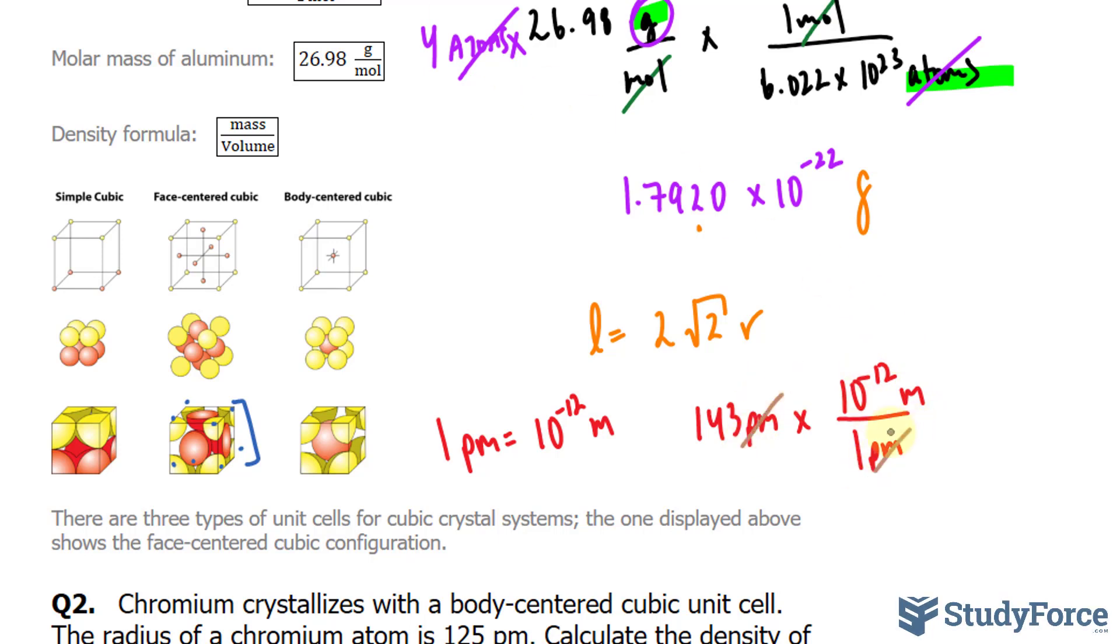These cancel out, and we'll take this number, 143 times 10 to the power of negative 12, and place it right into there. If you calculate this correctly, you should end up with a length that is equal to 4.045 times 10 to the power of negative 10 meters.